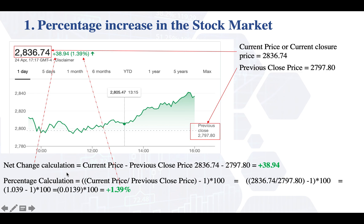It's very easy — just apply this formula, which is always valid: it's the current price divided by the previous close price, minus one, times 100. So it's the current price divided by the previous closed price, minus one. That gives us our percentage — 1.39%. Now, if you take 0.0139 times the closure price, it gives you exactly $38.94 — exactly the increment, how much the market value has increased since the day before, because in this case it's a daily chart.